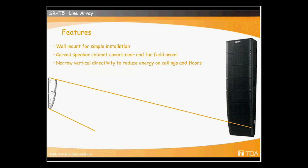The installation is very simple wall mount. It has a curved speaker complement. This allows us to cover the near field and the far field. With this very narrow vertical directivity of 35 degrees, this allows us to keep the energy off the ceiling and off the floors up front. This helps to prevent exciting the reverberant field in these rooms like a gymnasium.